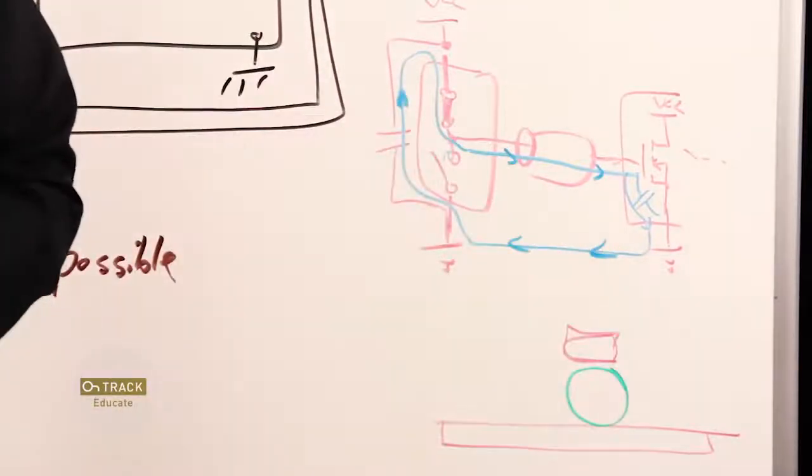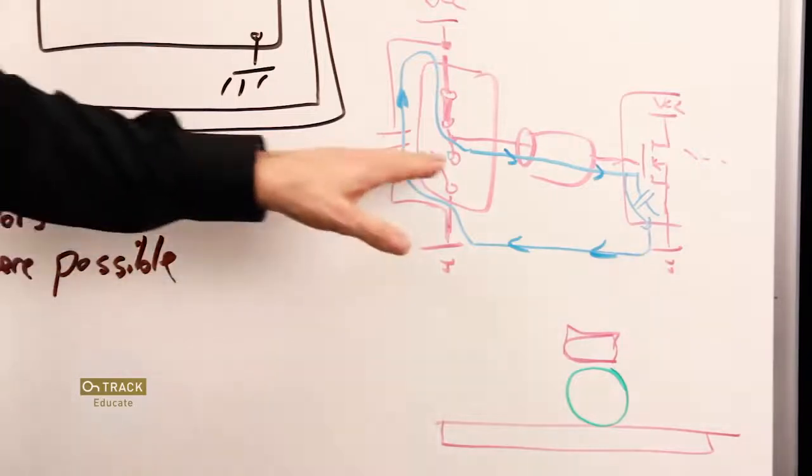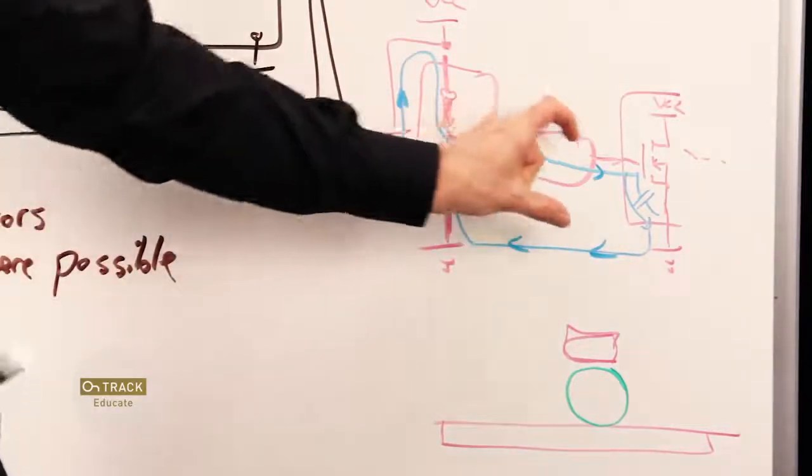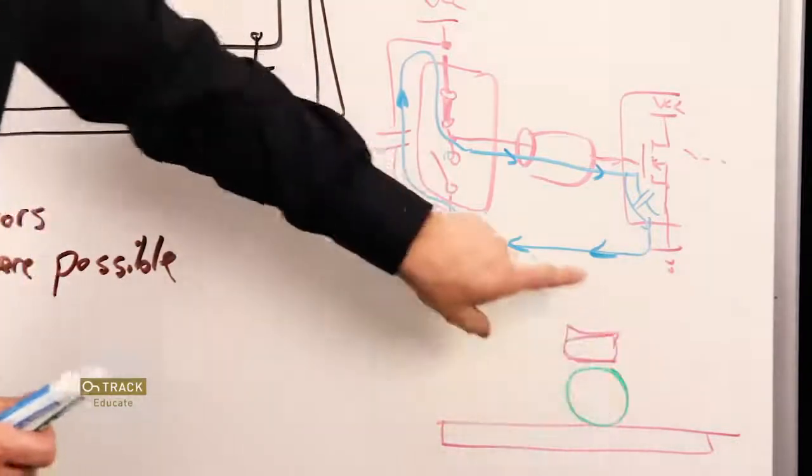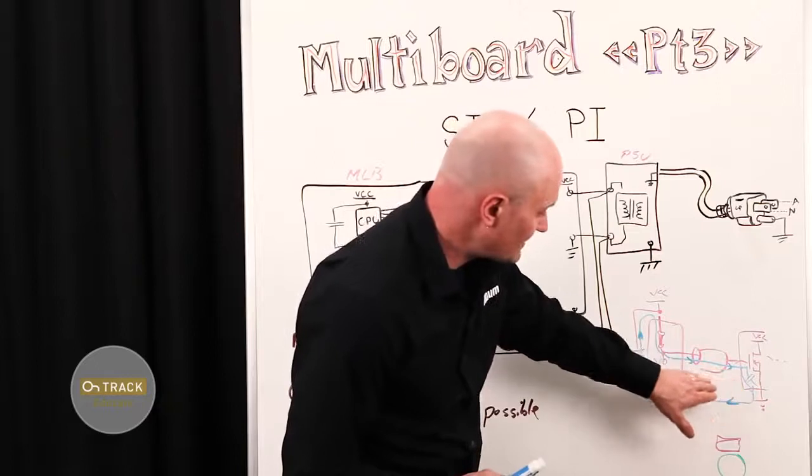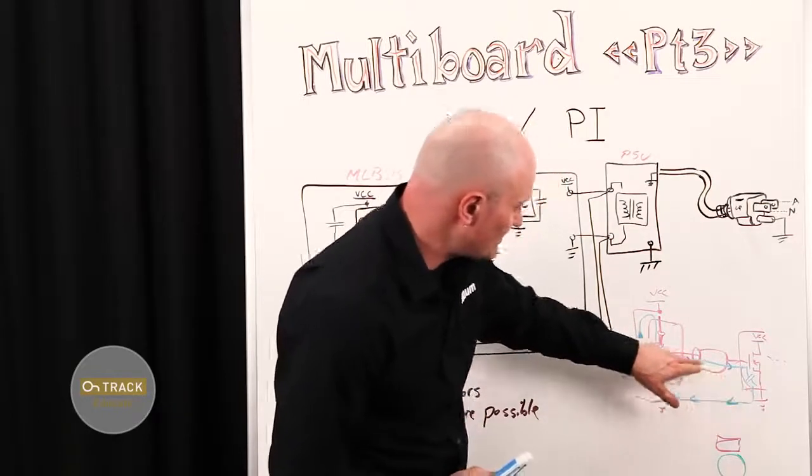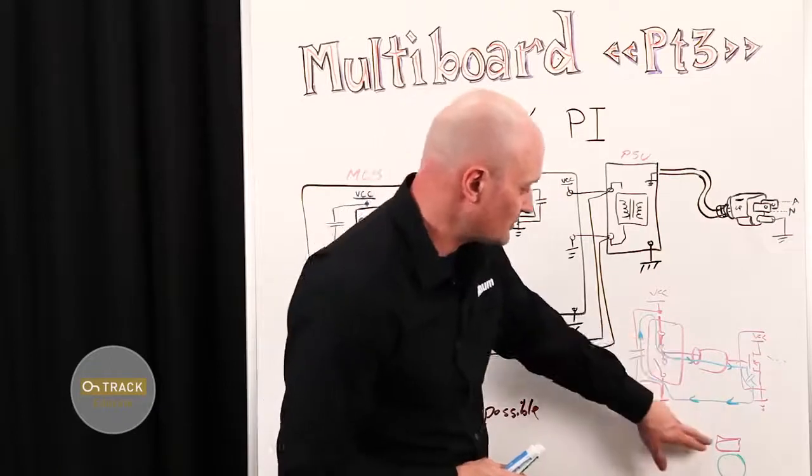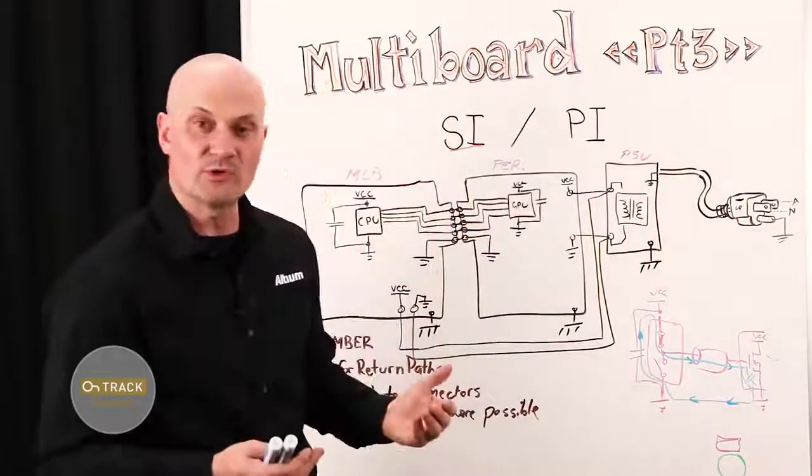Current in high speed switching scenarios follows the path of least impedance. What that actually means is it wants to have the smallest possible area in which to fill that charge as the voltage wave front travels down that transmission line. So at high speeds and high frequencies and edge rates, the return path current wants to flow as closely as possible to the actual signal trace down the PCB.